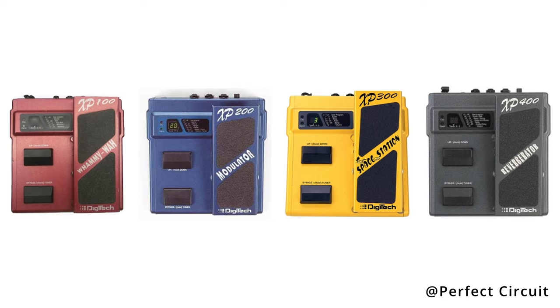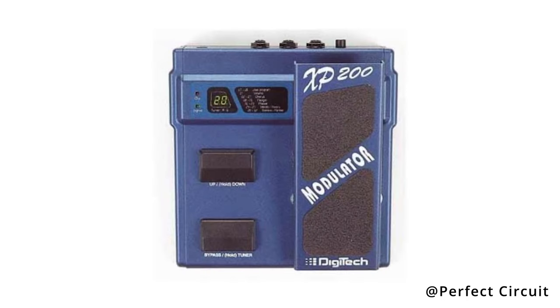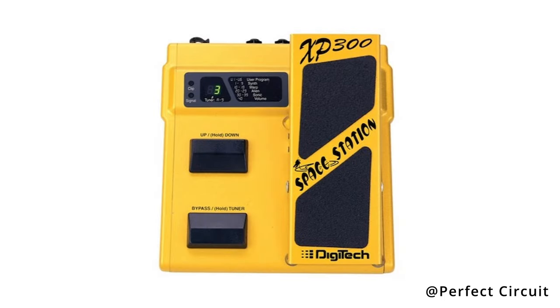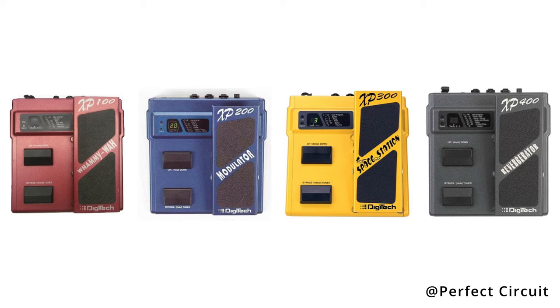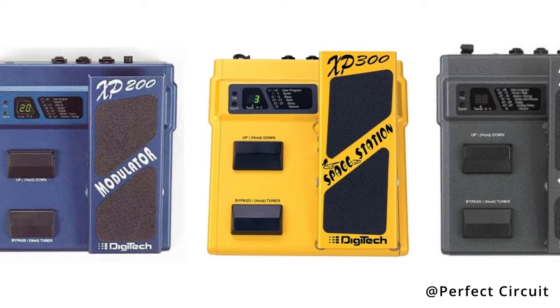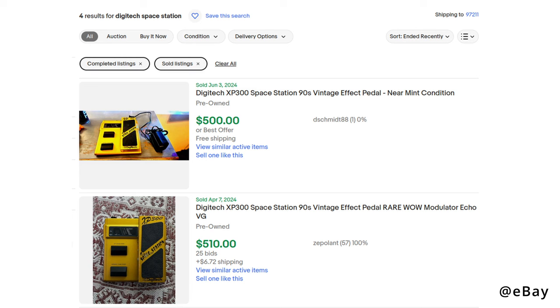In the late 1990s, DigiTech released the XP series of four digital effects guitar pedals. There was the XP-100 Whammy and Wah pedal, the XP-200 Modulator, the XP-300 Space Station, and the XP-400 Reverberator. Each one had a unique set of effects, the XP-300 Space Station being perhaps the most weird and desirable of them all, and also extremely rare and expensive if you want to buy one.